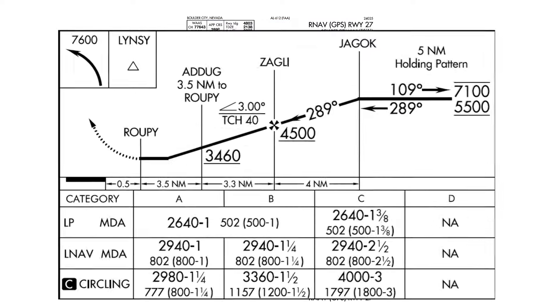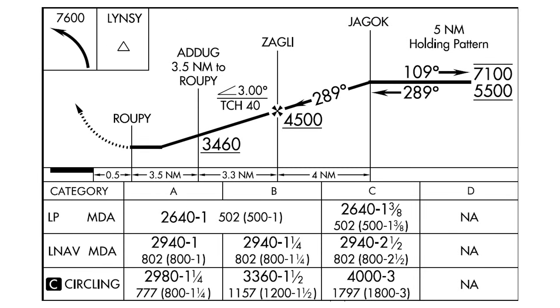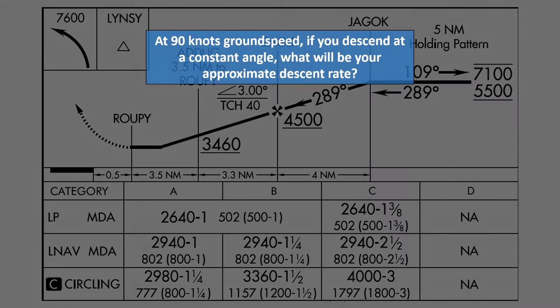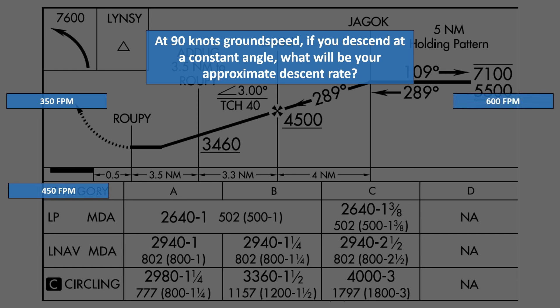Last question — we'll look to the profile view. At 90 knots ground speed, if you descend at a constant angle, what will be your approximate descent rate? 350 feet per minute? 600 feet per minute? 450 feet per minute? Or 700 feet per minute?